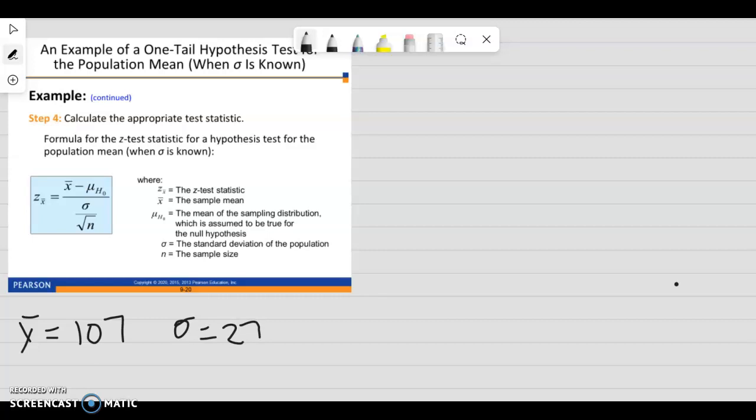n is 44, and then alpha is 0.05, and then the mean of the sampling distribution was given to us, or the hypothesis that we're testing is 115.